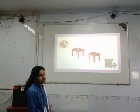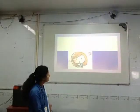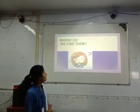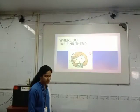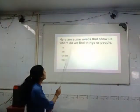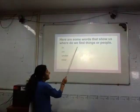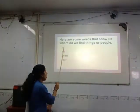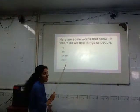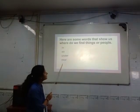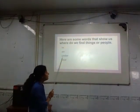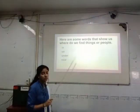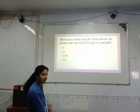So let's learn our today's topic. That name is: where do we find them? Here are some words that show us where we find things or people. Which are these words? In, on, under and near. These are the four words that tell us where we find things or people. They help us to find out things or people.